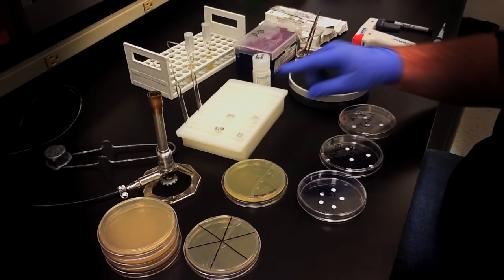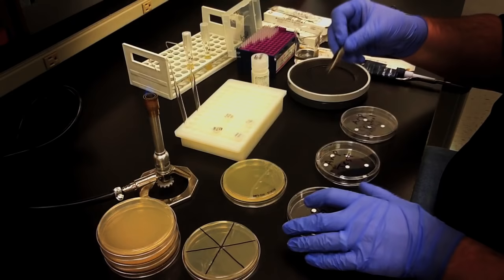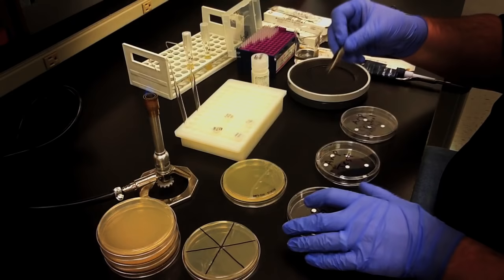Making sure to keep everything as sterile as possible, add a few 6 millimeter filter paper discs to a petri dish. I always add a few in case I drop one. Next, add 20 microliters of ampicillin solution to each disc.